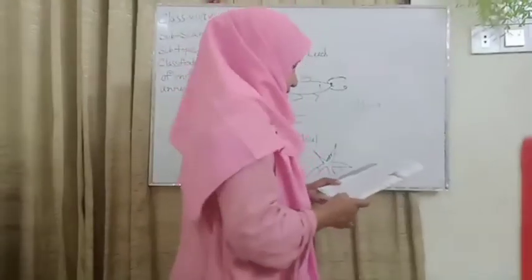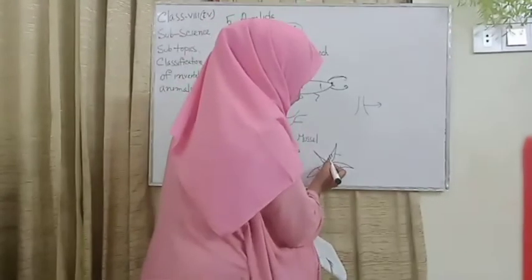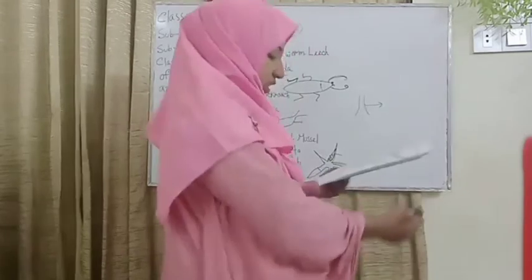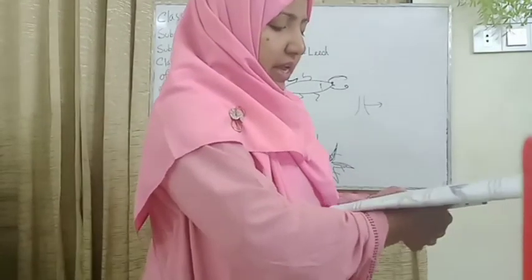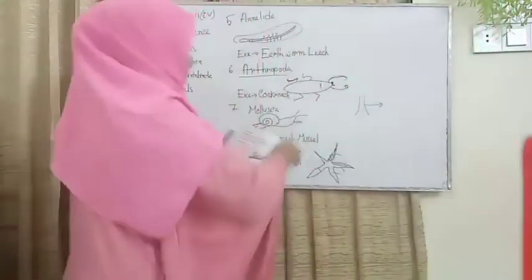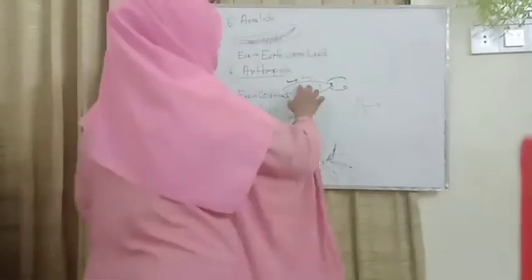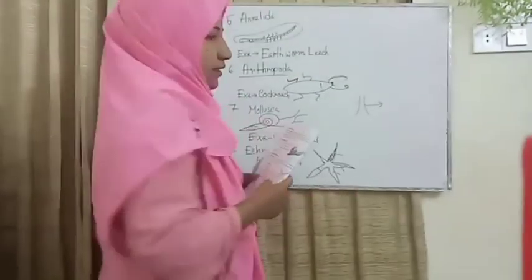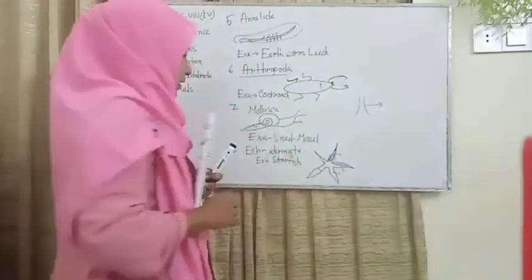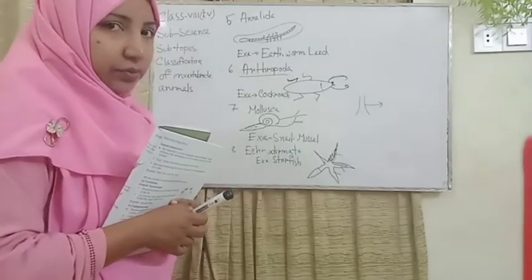A unique water vascular system is present. Comparing locomotion across phyla: in Annelida they have setae for movement, in Arthropoda they have segmented legs for movement, in Mollusca they have muscular feet for movement, and in Echinodermata (starfish) they have tube feet for movement.